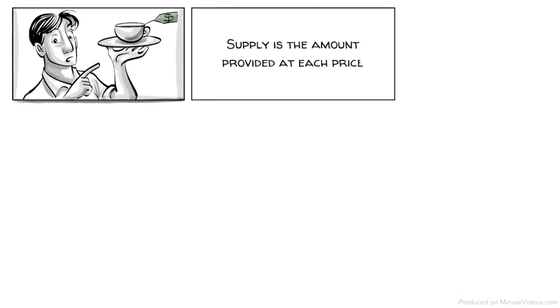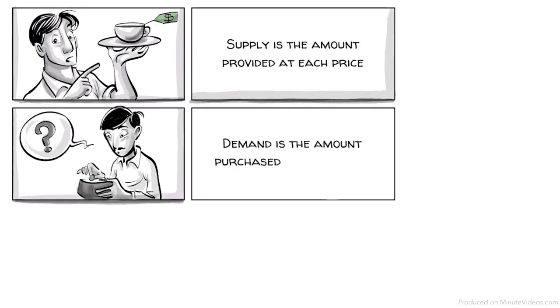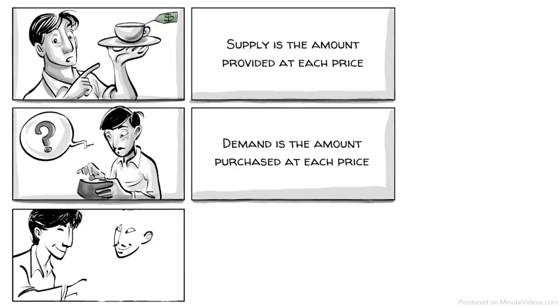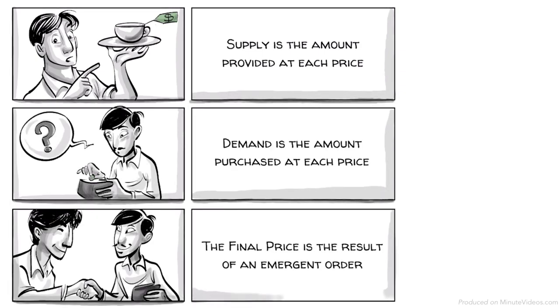Let's summarize. Supply is the amount provided at each price. Demand is the amount purchased at each price. The final price is the result of an emergent order.